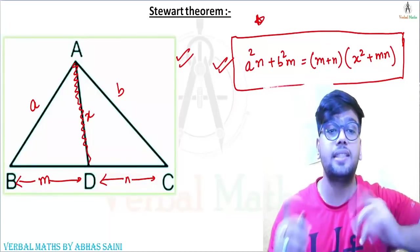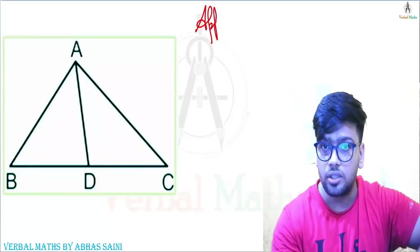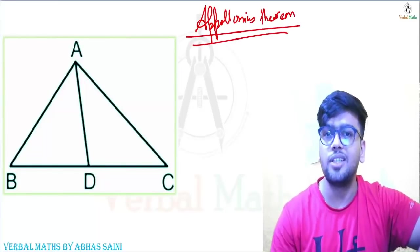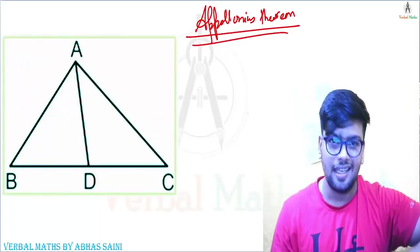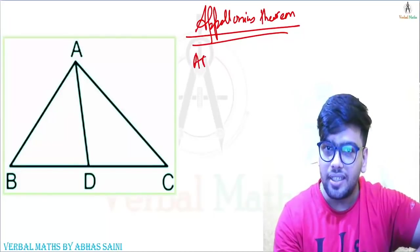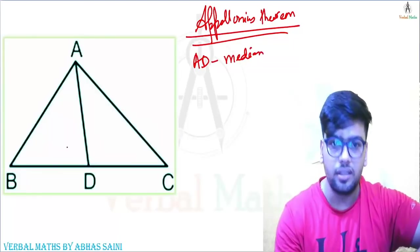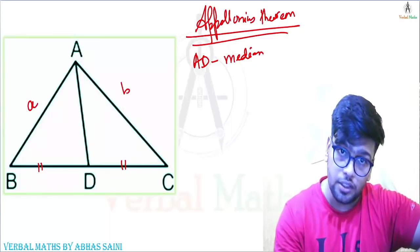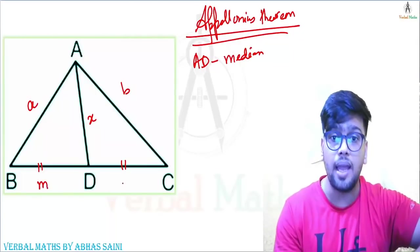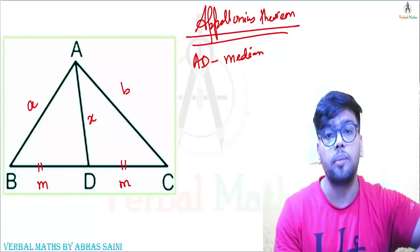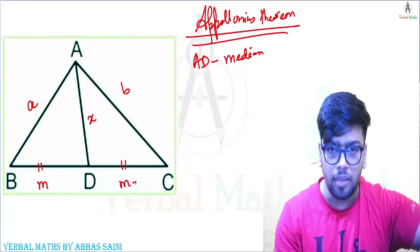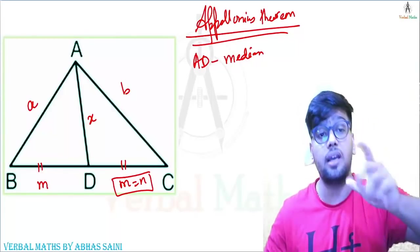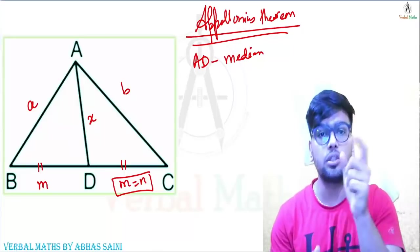Now let's discuss Apollonius Theorem, which everyone must have heard about. Apollonius Theorem works with medians. Let's say this is your triangle and AD is now a median — meaning AD divides BC into two equal parts. So if BD equals M then CD also equals M, which means M equals N. So Apollonius Theorem is a special case of Stewart's Theorem, and it is also very important.